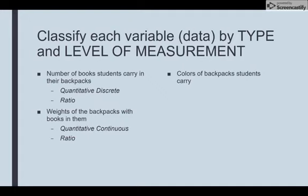The colors of the backpacks that students carry – well, colors obviously don't involve numbers. So it is words, so that would be qualitative data. Qualitative data is neither discrete nor continuous. If it's qualitative in terms of the level of measurement, it's either going to be nominal or ordinal. Since color doesn't really have a sense of order to it, I'm going to say it is nominal.